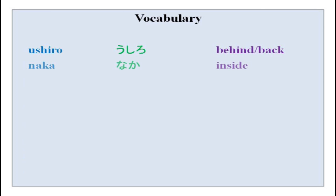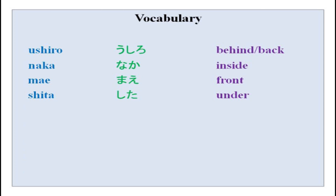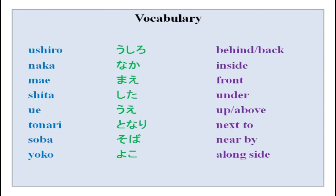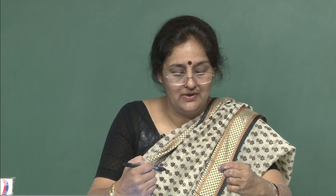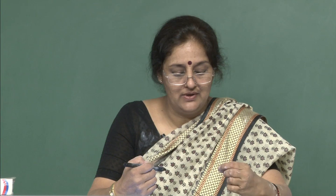Vocabulary covered: these are all locational nouns from this lesson — ushiro, naka, mae, shita, ue, tonari, soba, yoko, soto, and others. We will cover remaining ones in future classes.